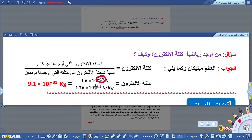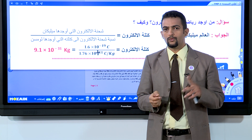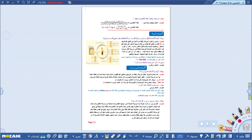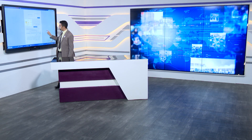النسبة التي أوجدها ثومسون بين شحنة الإلكترون إلى كتلته هي 1.76 × 10¹¹ كولوم/كيلوغرام. بقسمة شحنة الإلكترون على هذه النسبة، يصبح كتلة الإلكترون 9.1 × 10⁻³¹ كيلوغرام. الآن أصبحت شحنة الإلكترون وكتلته معروفتين، وتجارب العلماء بعد بعضها أفادتنا في معرفة هاتين الخاصيتين.